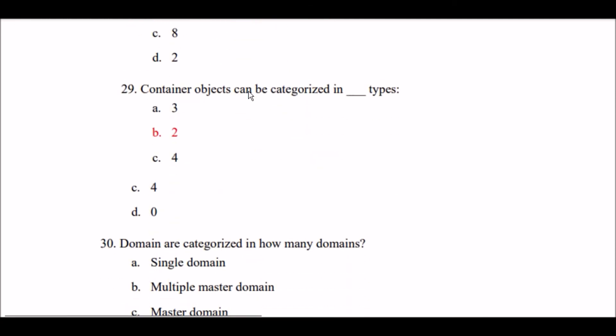Next question: Container objects can be categorized in blank space types. Option A: 3. Option B: 2. Option C: 4. Option D: 0. The right answer is Option B — container objects can be categorized into 2 types.